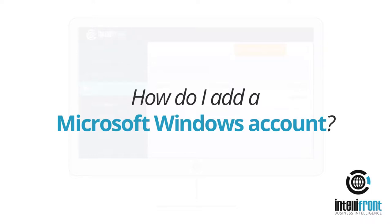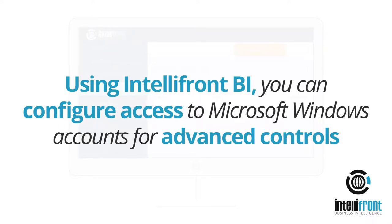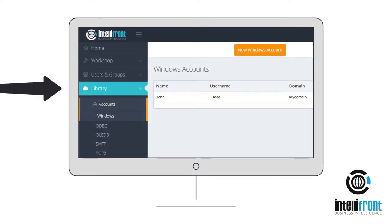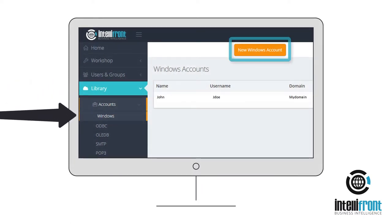How do I add a Microsoft Windows account? Using IntelliFront BI, you can configure access to Microsoft Windows accounts for advanced controls. Go to the Library, Accounts, Windows tab and add the credentials for any number of accounts and unlock the full power of IntelliFront BI.